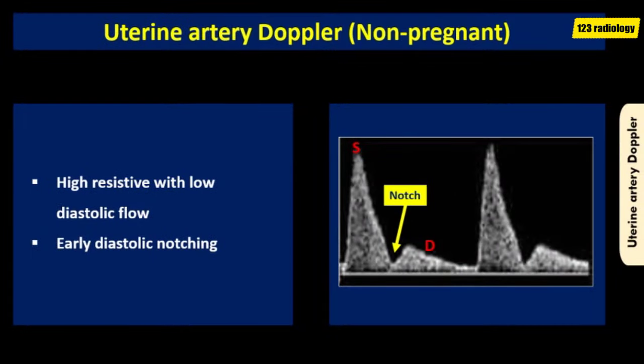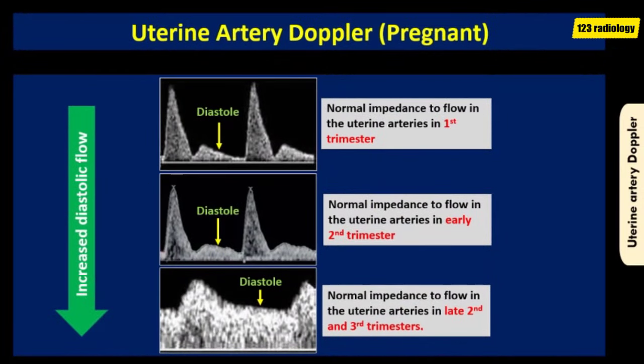In the non-pregnant uterus, the waveform of the uterine arteries is high-resistive, with low diastolic flow and early diastolic notching. The resistance to flow in the uterine arteries decreases with advancing gestation in normal pregnancies, reflecting trophoblastic invasion of the spiral arteries. So the uterine artery waveform changes from high resistance in the non-pregnant state to a low-resistance waveform in pregnancy, with continuous forward flow throughout diastole. This process is complete by about 18 weeks of gestation. In pregnancies with impaired placentation, high uterine vascular resistance will persist after this time.